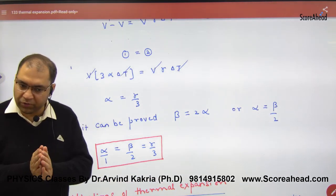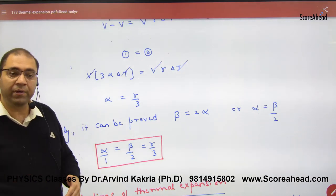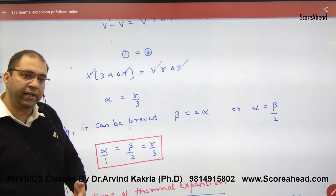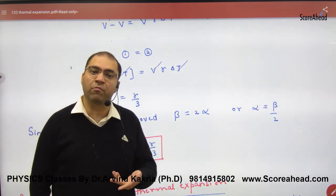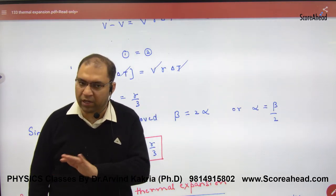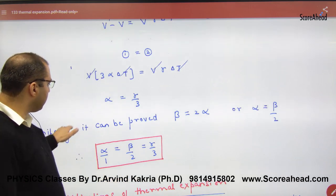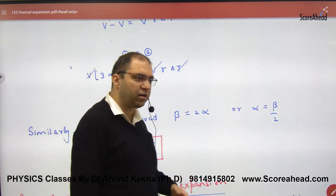So the same experiment you have to do. One time length, alpha and gamma. Then you have to do another step. But you don't need to do it. Now surface here, the formula is L square. So if you need to do a relation with alpha. Similarly, it can be proved that beta is equal to two times alpha or alpha is equal to beta by two.